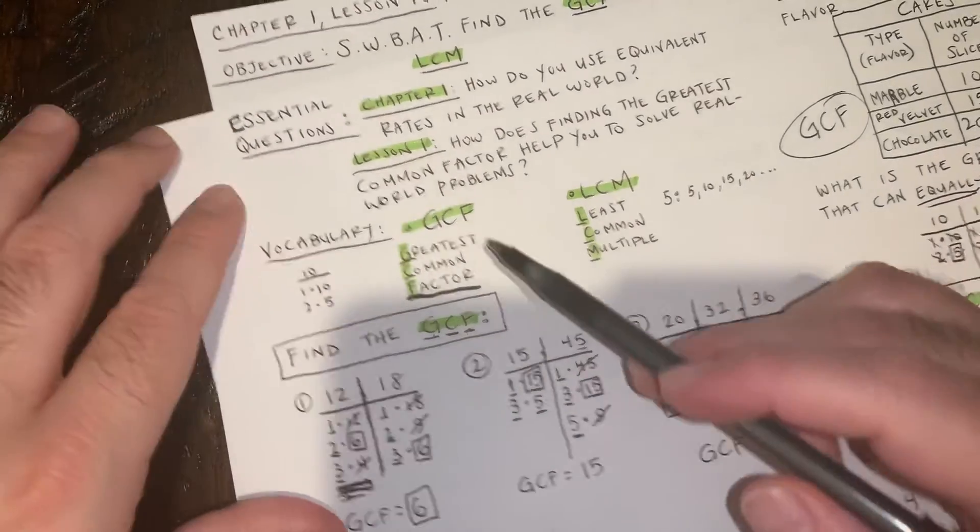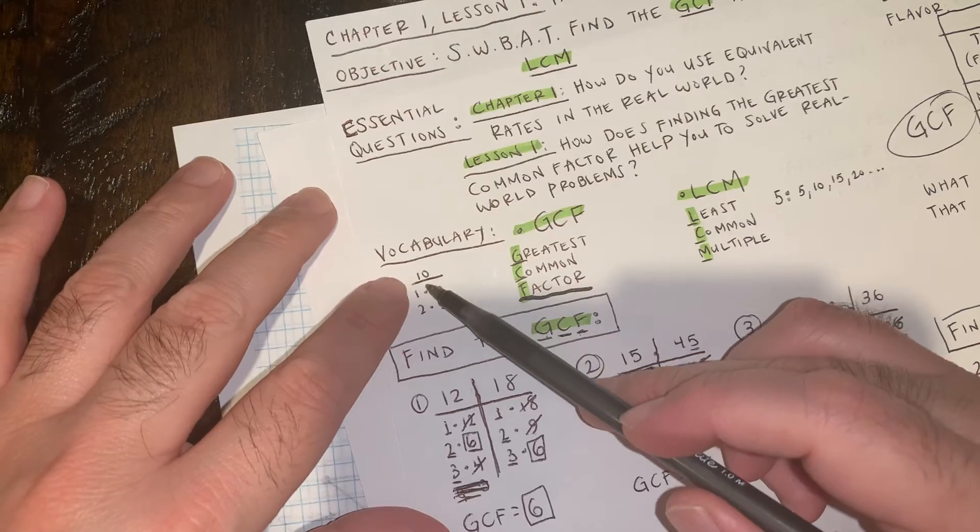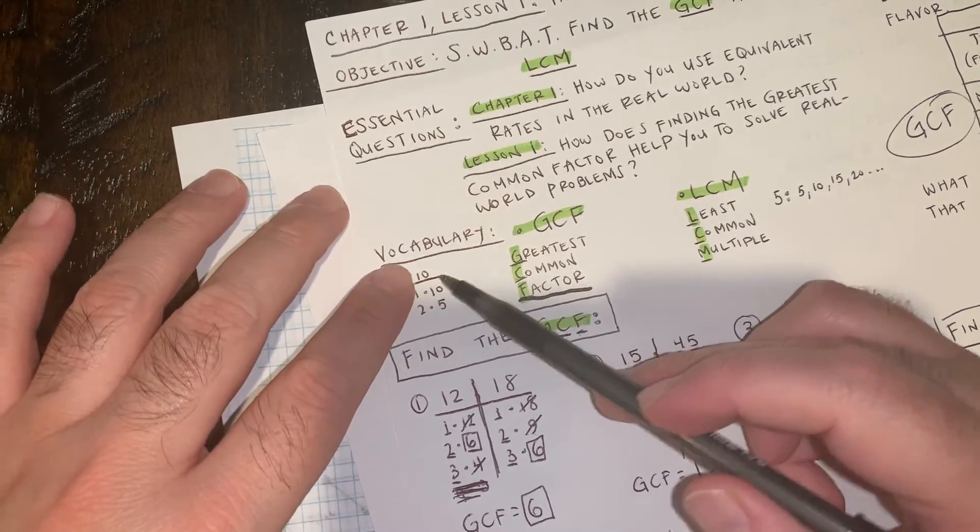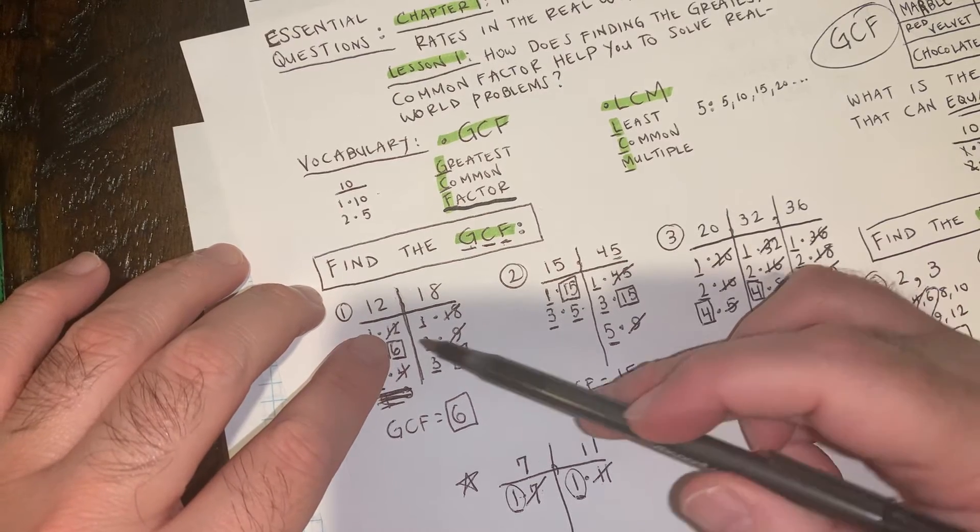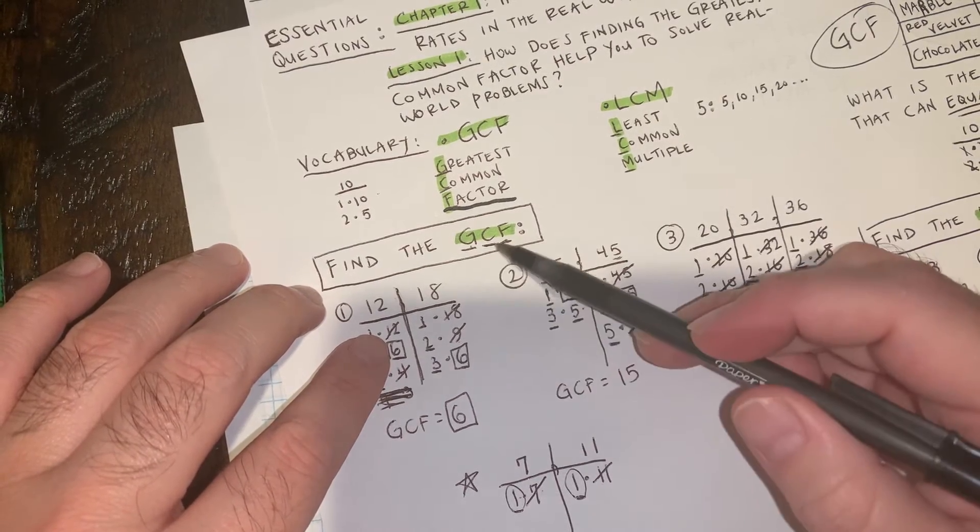We did greatest common factor. Remember, when you're doing greatest common factor, you're splitting the number into the different factors that give you that number. And then you're finding what is the biggest number that is the same on both of them, because it's greatest common factor.